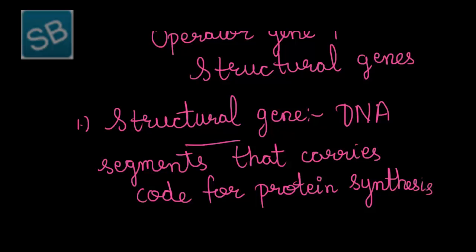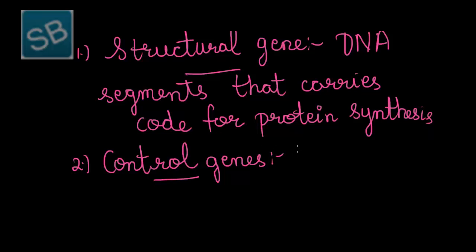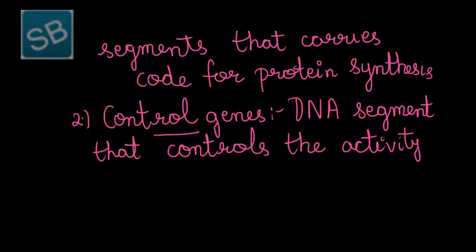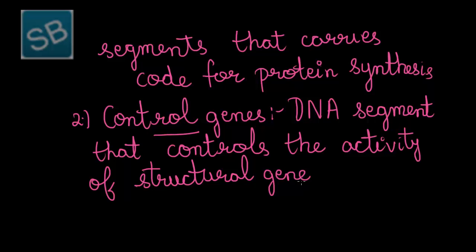The second type of genes are control genes. These are the genes or DNA segments that control the activity of structural genes — that is, the structural genes which carry the code for protein synthesis. The entire activity of biosynthesis is controlled by control genes. This gene activity can be in either manner, that is, by either induction or suppression.